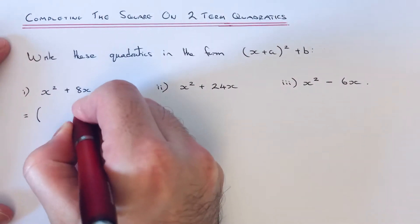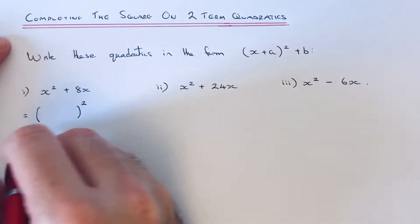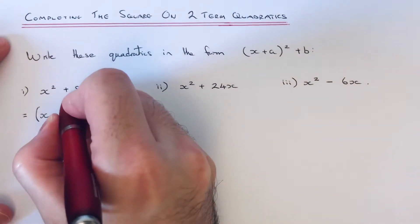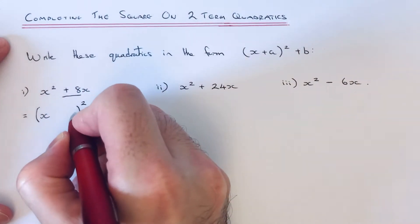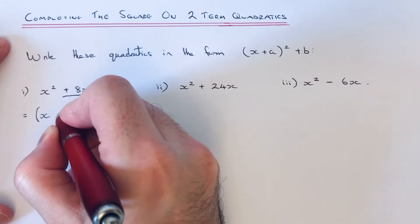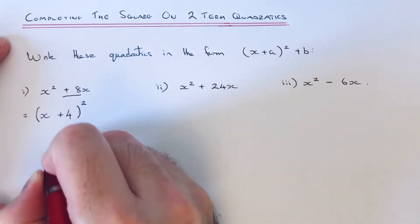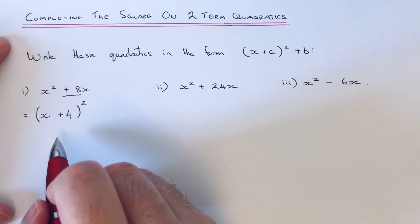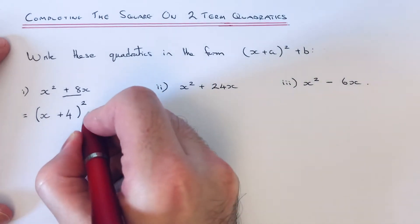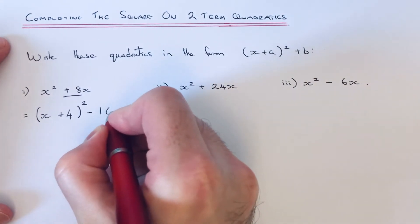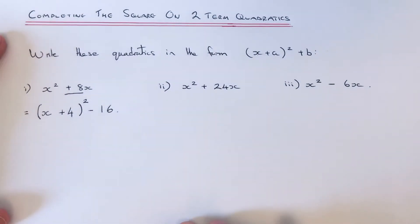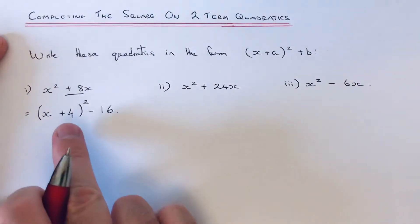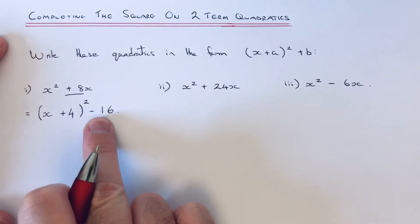So we start off by doing a bracket and putting the squared there. We need an x at the start. To get the number, we half the number before x. So a half of 8 is 4. Okay. What you do next is square the 4. So 4 squared is 16 because it's 4 times 4. And then you minus the 16 off the end. And that is the final answer. So a would be 4, b would be minus 16.